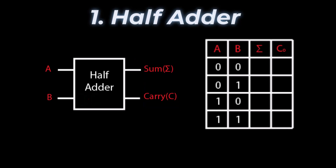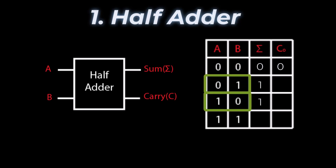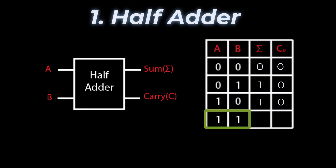Looking at the truth table: zero plus zero gives a sum of zero and carry of zero. Zero plus one, or one plus zero, gives a sum of one with no carry out. One plus one gives a result of binary 01, meaning the sum is zero and the carry is one.